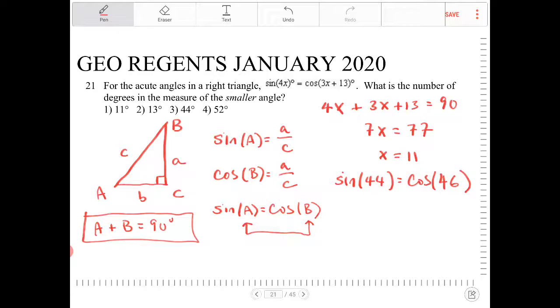To answer the question now, it says what is the number of degrees in the measure of the smaller angle? Well clearly, the smaller angle would have to be 44, so that would be option 3.